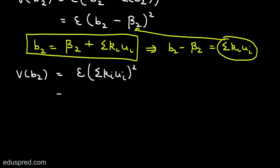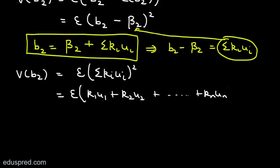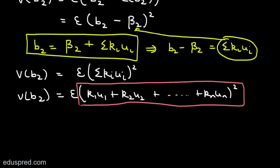Expanding the squared expression, we can write Var(B2) = E[(k1*u1 + k2*u2 + ... + kn*un)²]. The main challenge in solving this is expanding this bracket. Let's do an exercise to see how to solve this term. This is summation(ki*ui) whole square.